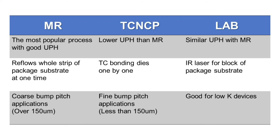In summary, mass reflow is the most popular process with good UPH (units per hour) productivity, because it reflows the whole strip or package substrate at one time. However, the whole package is exposed to reflow and can get thermal damage if devices are sensitive to heat. It is good for coarse bump pitch applications over 150 micrometers. TC-NCP is good for fine bump pitch applications less than 150 micrometers with better die placement accuracy, but it attaches die one by one so UPH is lower than mass reflow.